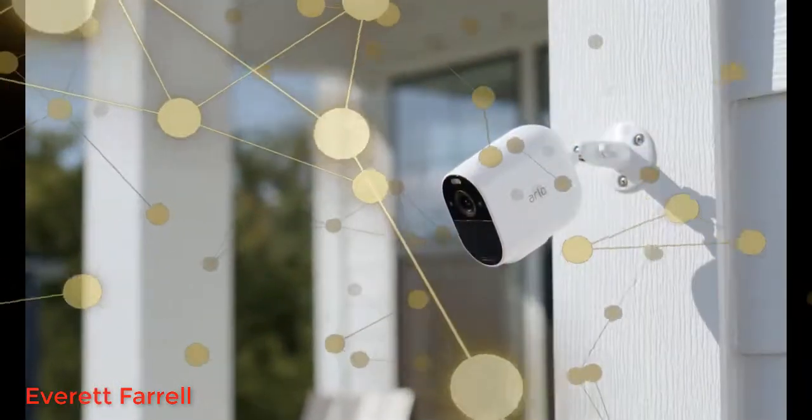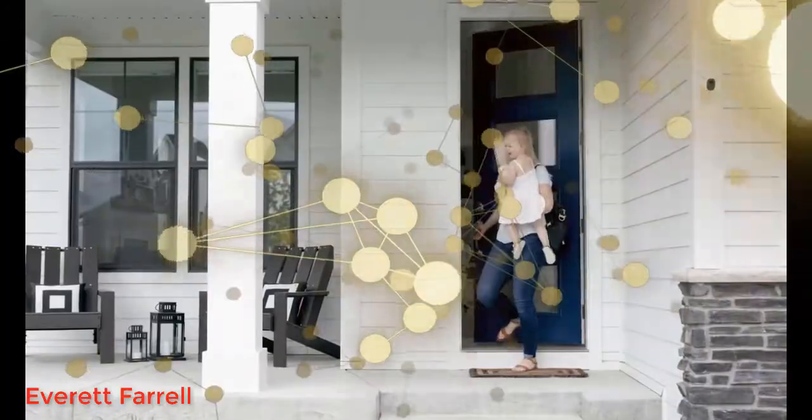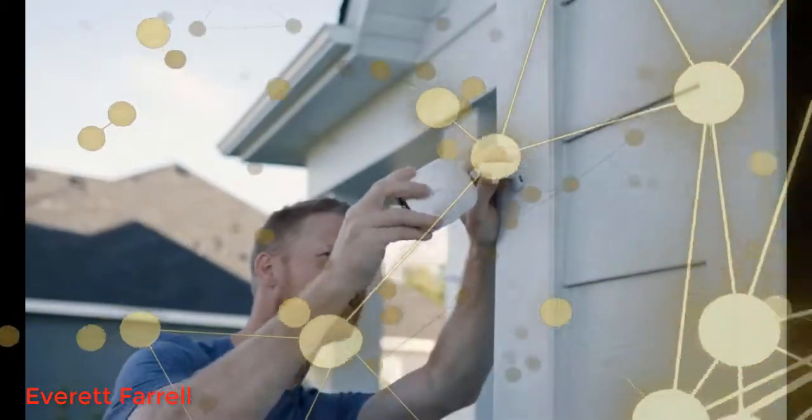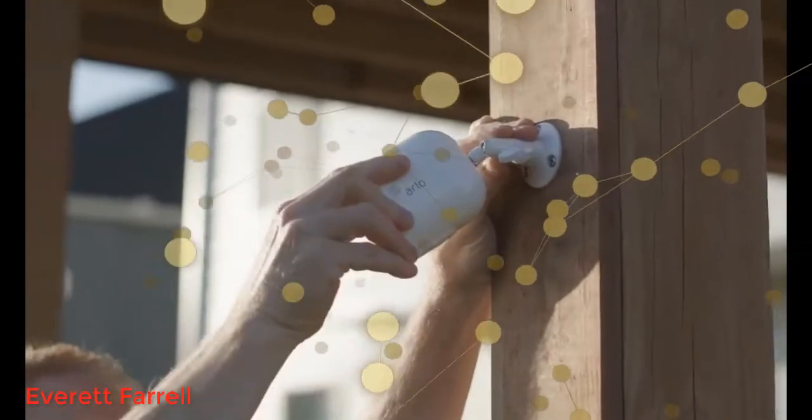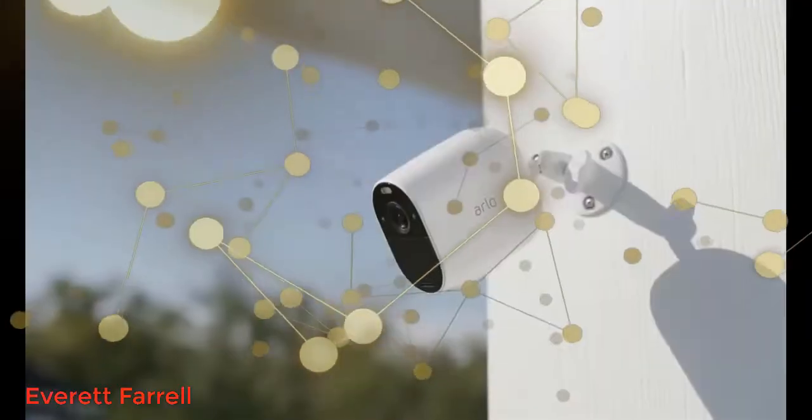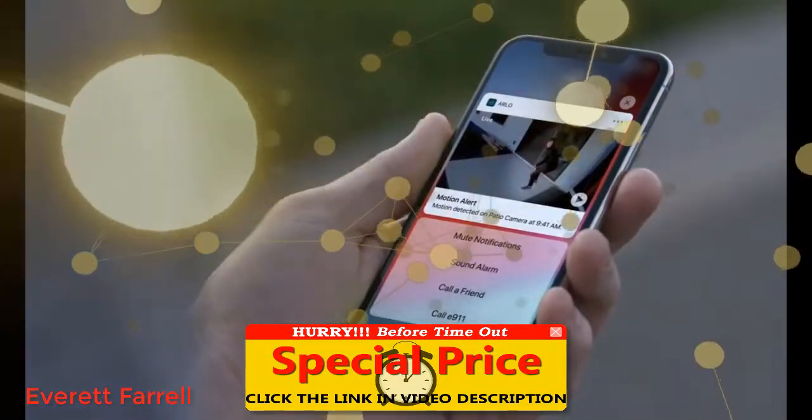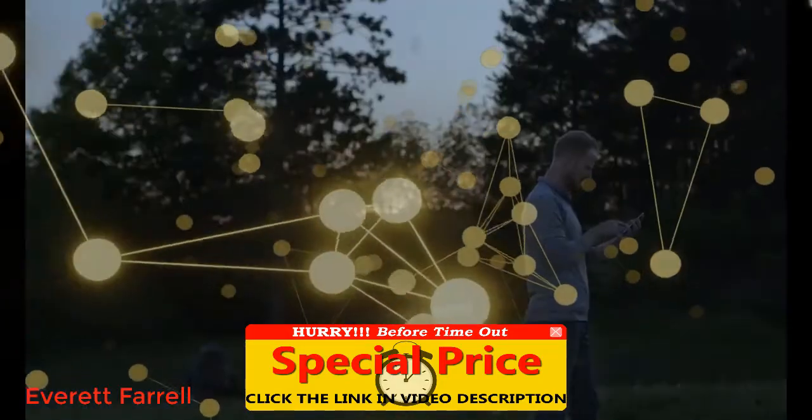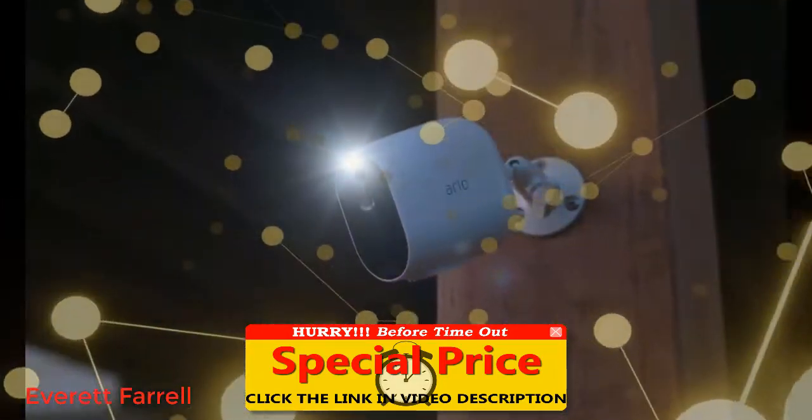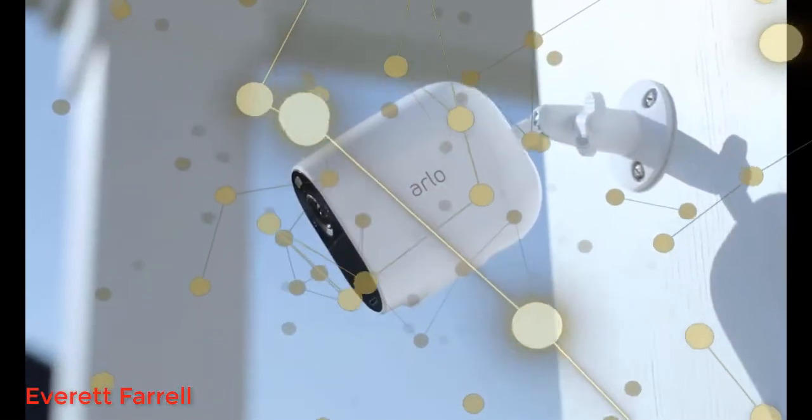The Arlo Essential Spotlight camera makes it easier than ever to see the essential details. It's security you can easily set up almost anywhere and connects directly to Wi-Fi. It's built to last rain or shine. Receive alerts on your phone when motion is detected so you can take quick action and see in color even at night.